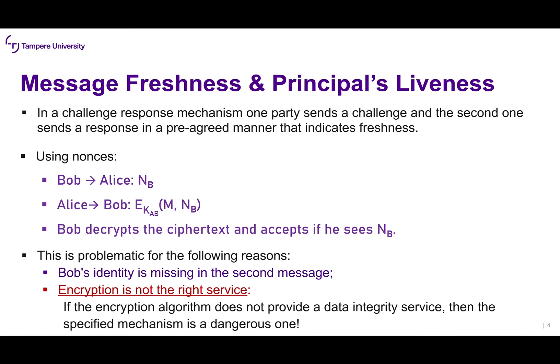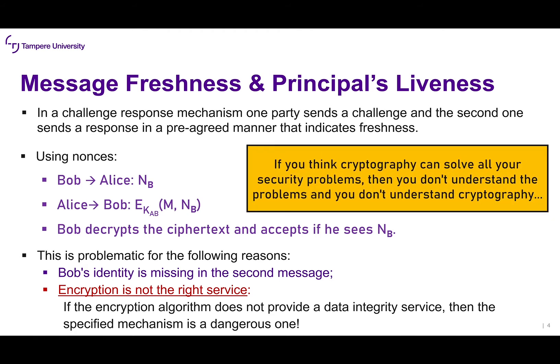This is problematic, however, because Bob's identity is missing in the second message. Also, encryption is not the right service here — if the encryption algorithm does not provide a data integrity service, the mechanism is a dangerous one. This brings us back to something mentioned in the first lecture: if you think cryptography can solve all of your security problems, then you don't understand the problems and you don't understand cryptography. Just encrypting messages doesn't solve integrity issues — Bob cannot verify the integrity of the exchanged messages.